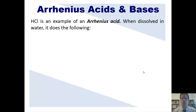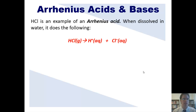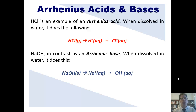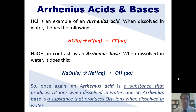HCl is an example of an Arrhenius acid. When dissolved in water, it dissociates from HCl to form H+ and Cl−. NaOH, or sodium hydroxide, in contrast, is an Arrhenius base. When dissolved in water, it dissociates to form sodium cation and hydroxide, or OH− anion. Thus, an Arrhenius acid is a substance that produces H+ ions when dissolved in water, while an Arrhenius base is a substance that produces hydroxide ions when dissolved in water.